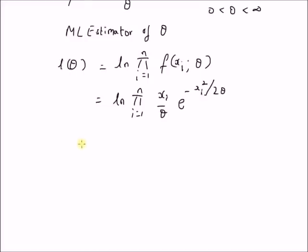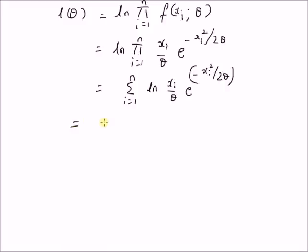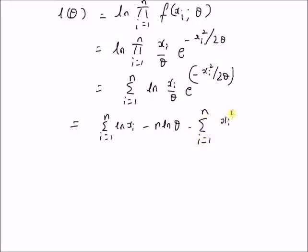The logarithm of the product becomes the summation of the logarithm, which is summation from i equal to 1 to n of the logarithm of xi over theta times exponential of minus xi squared over 2 theta. This equals summation from i equal to 1 to n of logarithm of xi, minus n times logarithm of theta, minus summation from i equal to 1 to n of xi squared over 2 theta. So this is the log likelihood function.